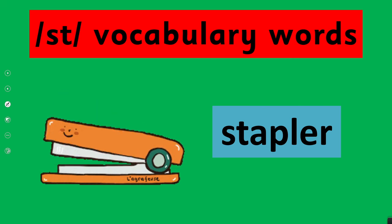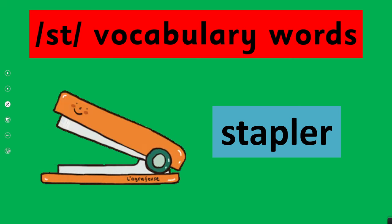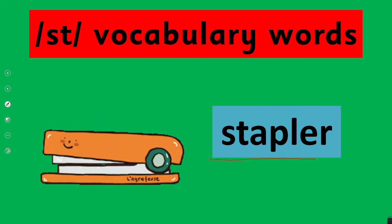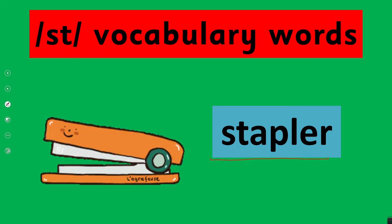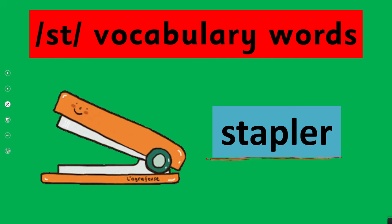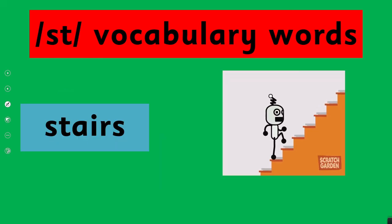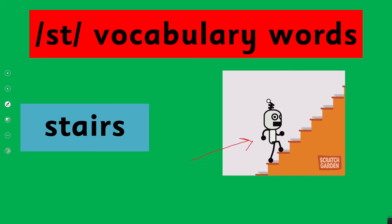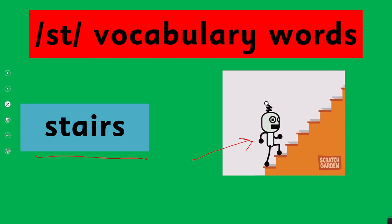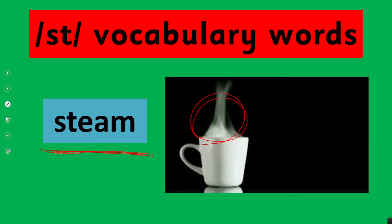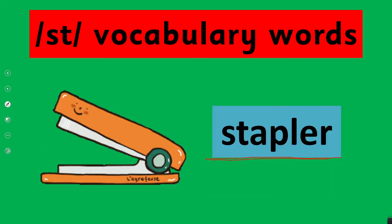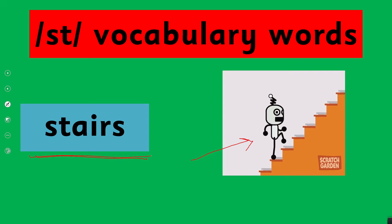Then what is this? Aapne class mein kabhi dekha isko — this is a stapler. Stapler. This robot is climbing stairs — stairs. Now here comes the magic, let's go back: the words again — steam, stapler, stairs.